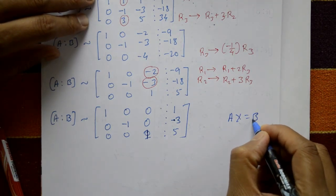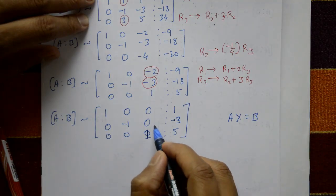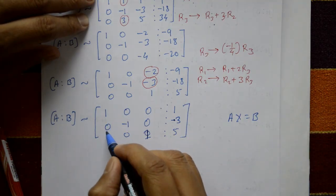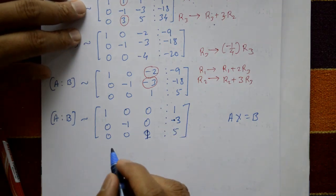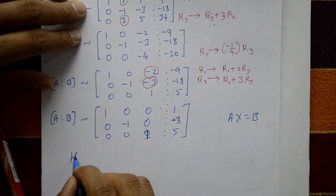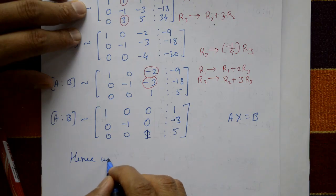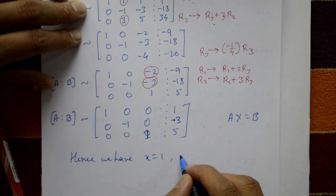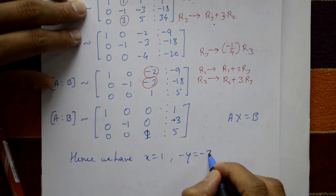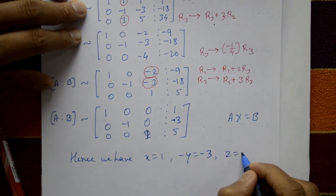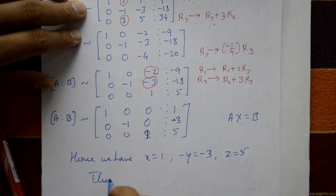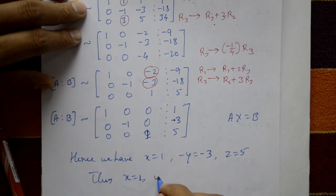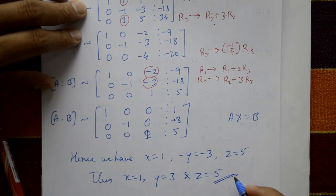This matrix is now in diagonal form — all non-diagonal elements are zero — representing Ax = B. Reading off the solution: x = 1, y = -3... correcting: y = 3, and z = 5. Thus x = 1, y = 3, and z = 5 are the required values.